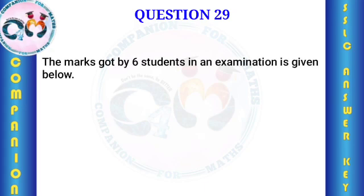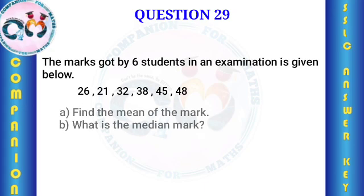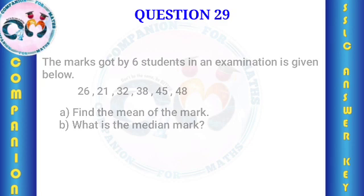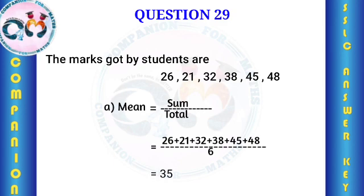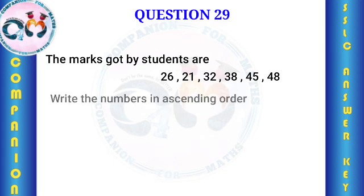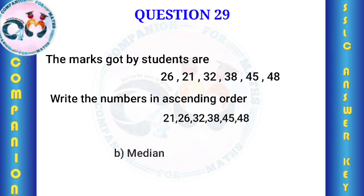The marks scored by 6 students in an examination are given. Find the mean of the marks, the median mark. The mean equals sum divided by total number of students; answer is 35. For the median, arrange the values in ascending order, then add the two middle values and divide by 2.